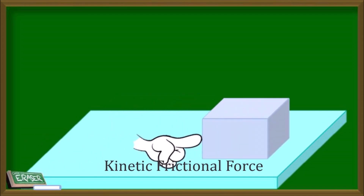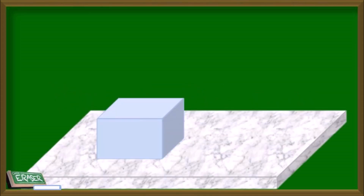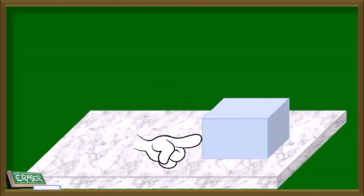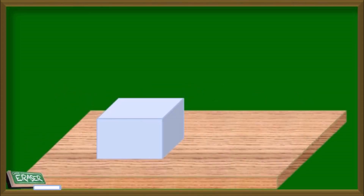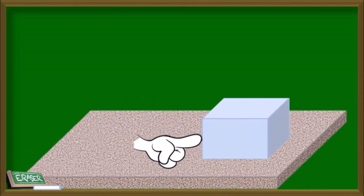Once the box starts moving, the static frictional force is replaced by kinetic frictional force, which acts on objects in motion. The amount of frictional force depends on factors such as the nature of the surfaces, the force pressing the surfaces together, and the roughness of the surfaces.